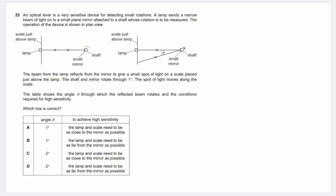But if the mirror is rotated at a particular angle, just like what we are seeing in the second diagram here, then as the incident light goes to the mirror, it gets reflected back to the screen on the left side, where the light is reflected at the angle of theta. The question states the beam from the lamp reflects from the mirror to give a small spot of light on a scale placed just above the lamp. The shaft and the mirror rotate through one degree. The spot of light moves along the scale.